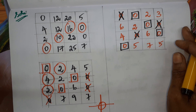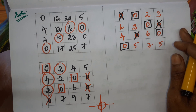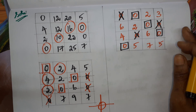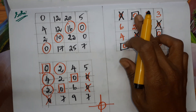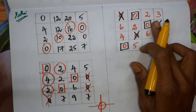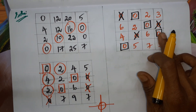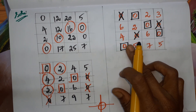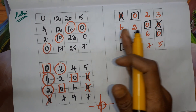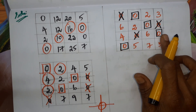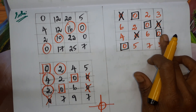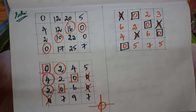Now check row-wise and column-wise whether we have an assignment in every row and column. First row — yes, second row — yes, third row — yes, fourth row — yes. Column-wise: first column, second column, third column, and fourth column — all have assignments. We have obtained the optimum assignment.